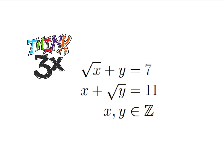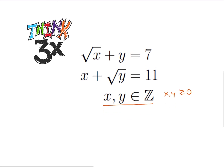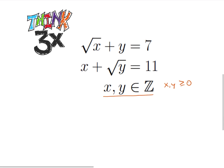So the first thing we're going to notice is that x and y are integers. That means 7 minus y is an integer, which means that the square root of x must also be an integer. Same thing with the square root of y. So it tells us that x and y both need to be greater than or equal to 0 — they're natural numbers, or whole numbers: 0, 1, 2, 3, and so on.